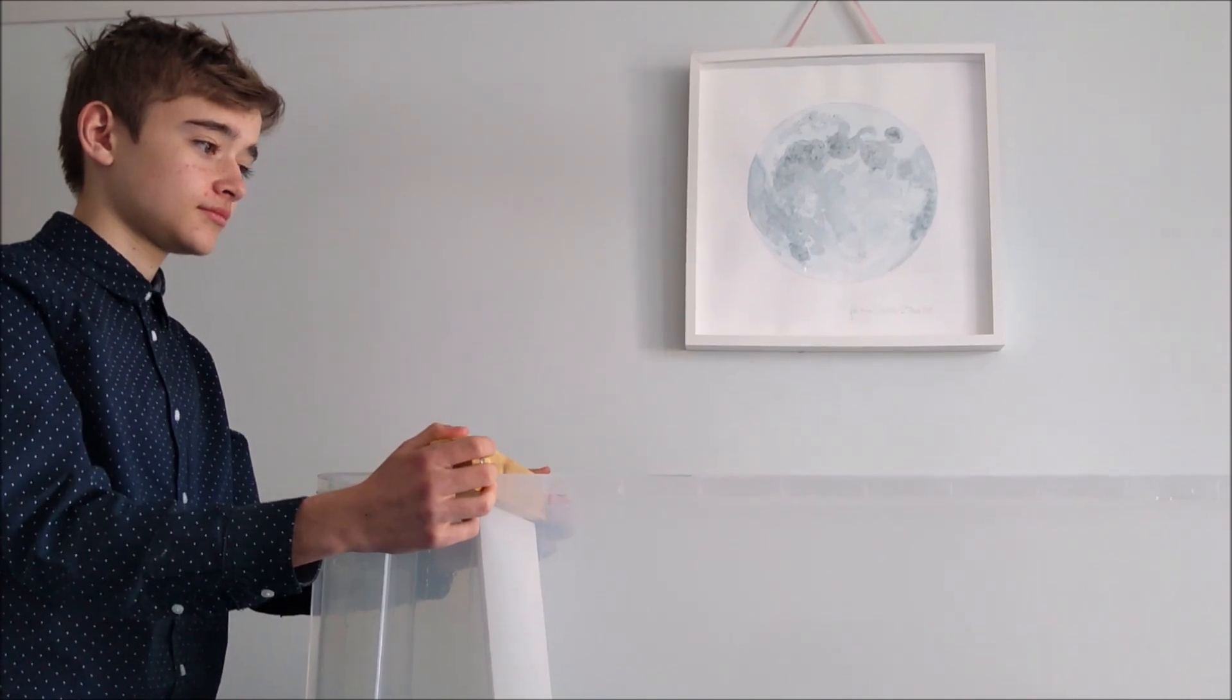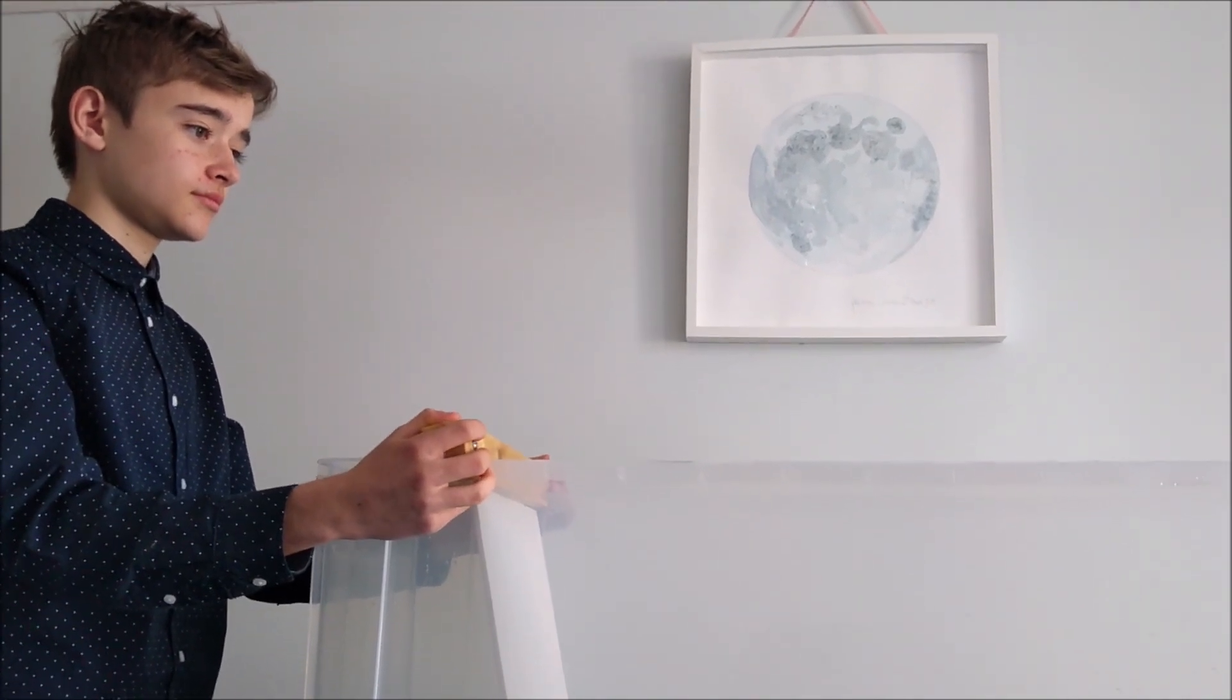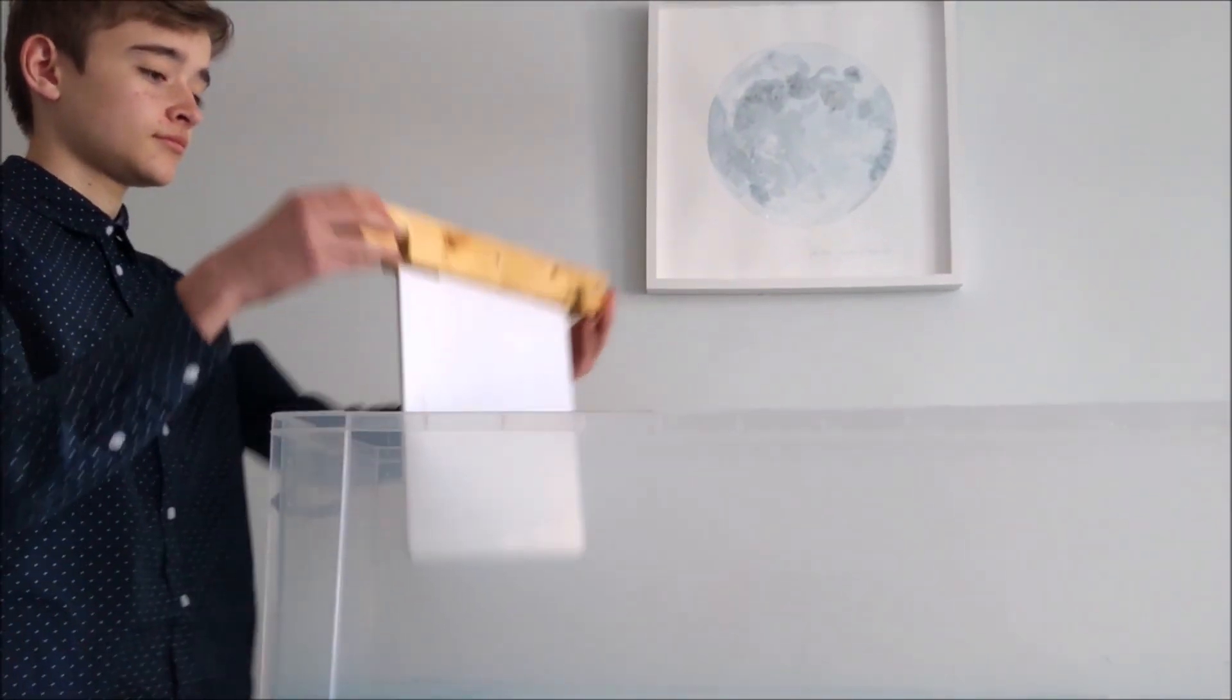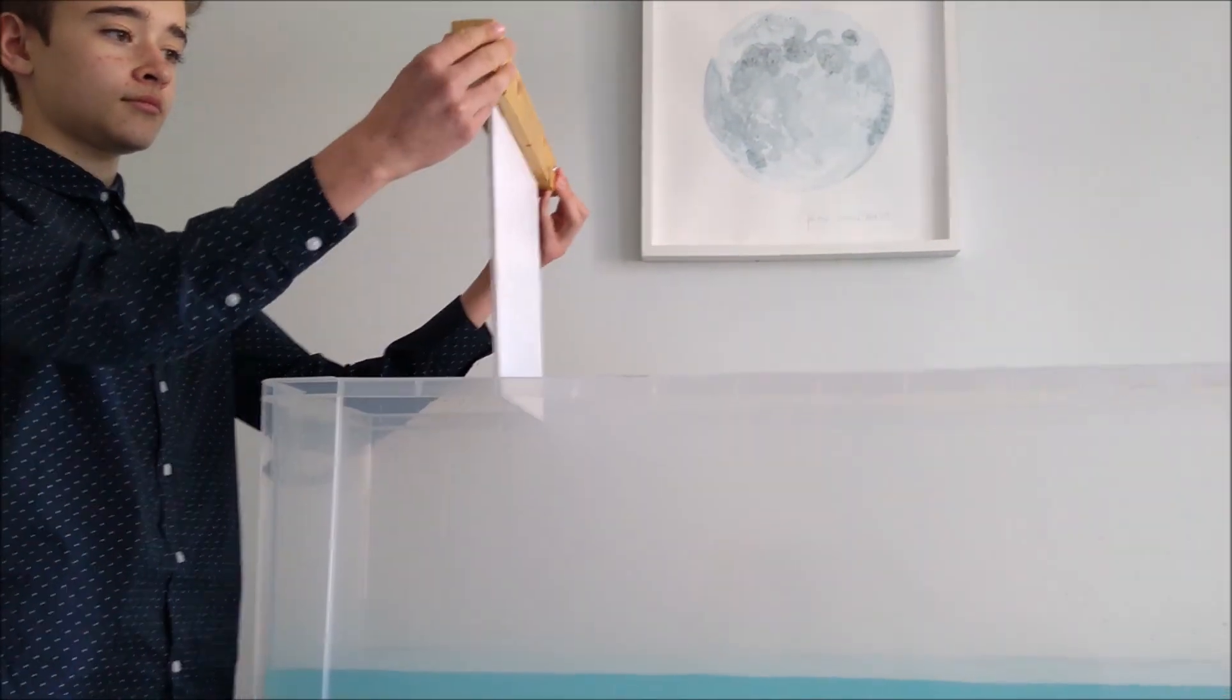So before we begin the demonstrations, let's show you how the wave tank works. The first thing you need is a willing volunteer, in this case George. And then a paddle, which is made out of a sheet of plastic, screwed to a piece of wood that slots over the top of the box.